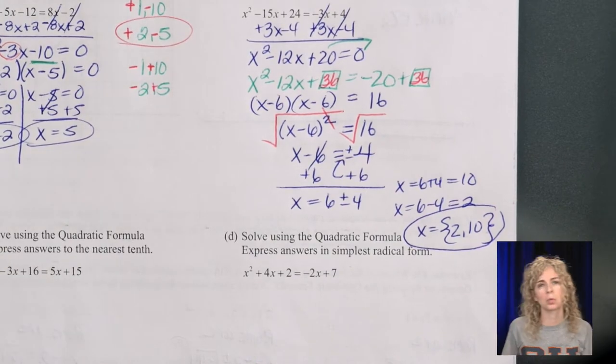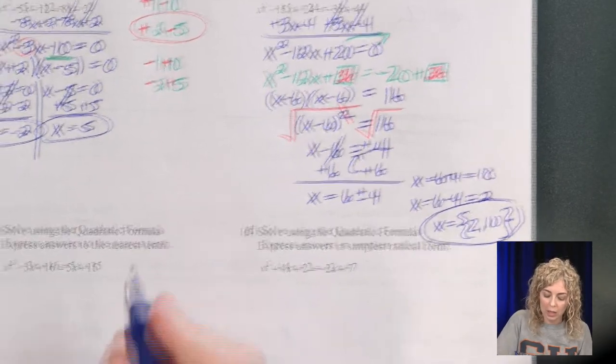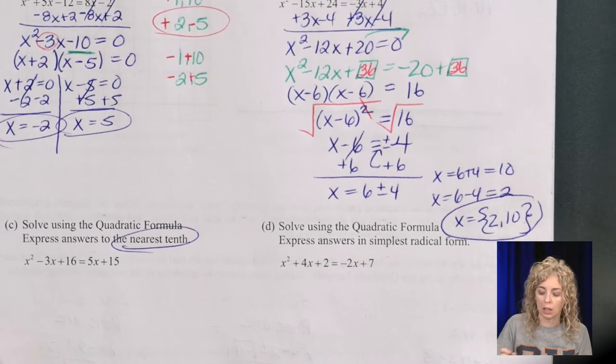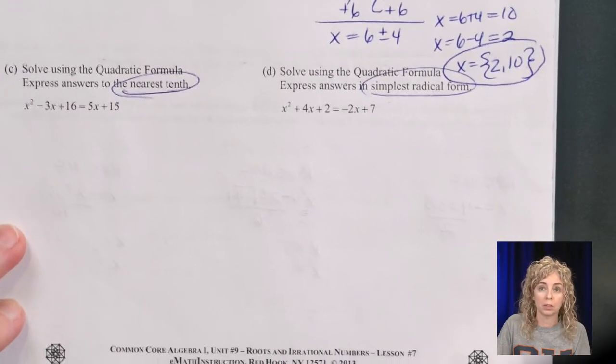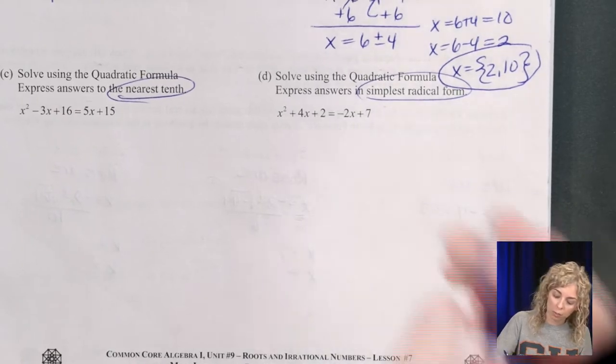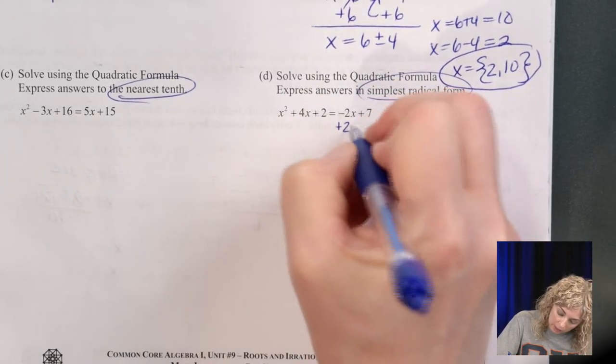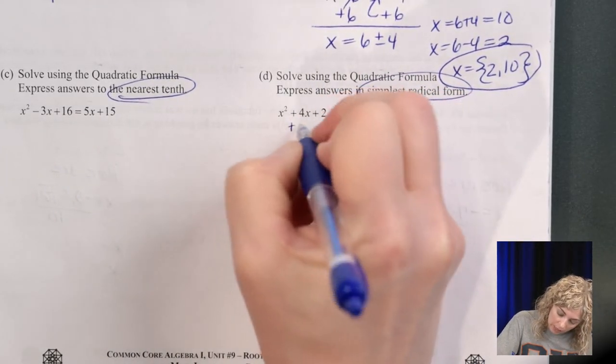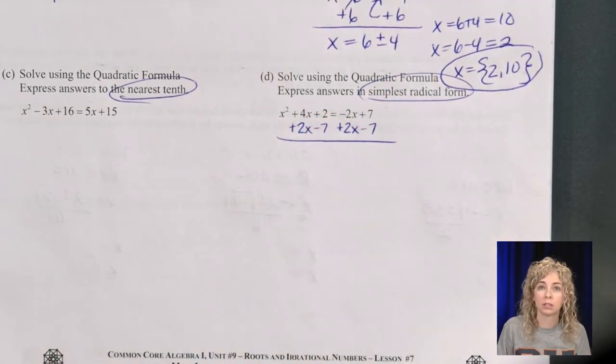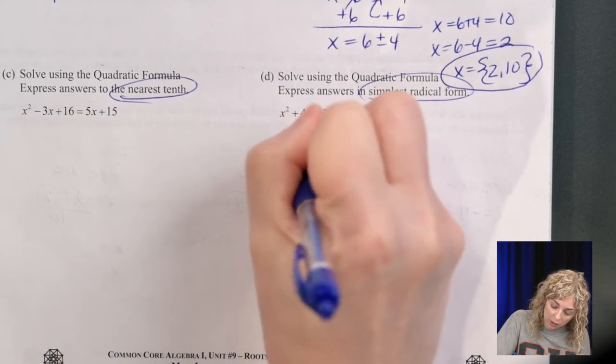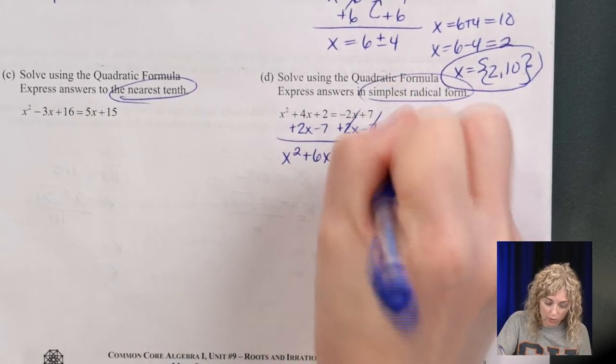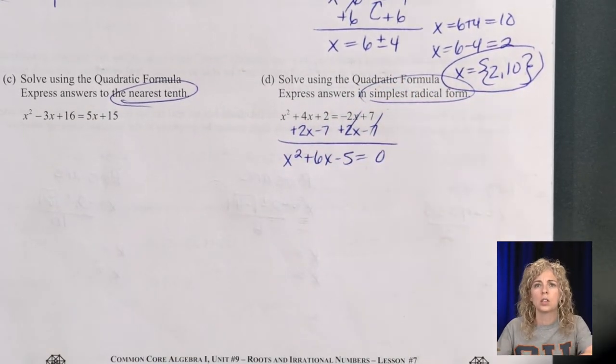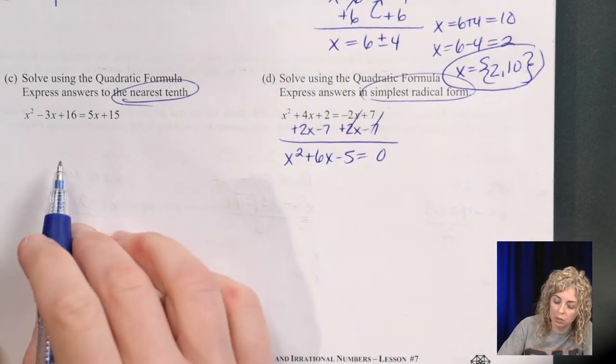So of the two at the bottom, which one do we want to do? Well, the one on the left says to solve using the nearest tenth, the harder one's in simplest radical form, so let's do that one. So I'm going to add 2x, subtract 7, add 2x, subtract 7. So we get x squared plus 6x minus 5 equals 0. So quadratic formula, since we're skipping this one,